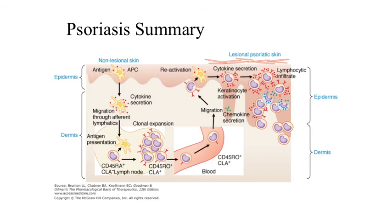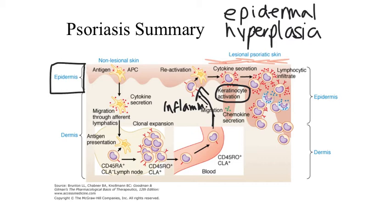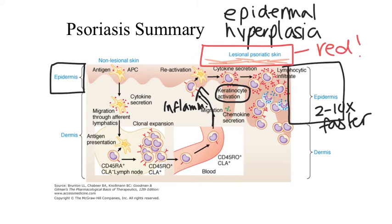In psoriasis, the inflammatory response triggers several reactions in the skin that result in the characteristic lesions. First, keratinocytes — which are skin cells — begin to proliferate, a process known as epidermal hyperplasia. Normally the epidermis is the narrowest layer of the skin, but in individuals with psoriasis, epidermal growth is anywhere from 2 to 10 times faster than normal, and the epidermis grows significantly thicker. This thickened epidermis results in the formation of plaques on the surface of the skin. Additionally, the T cell response results in increased vascularization of the growing epidermis, which causes the erythema or redness of the plaques.